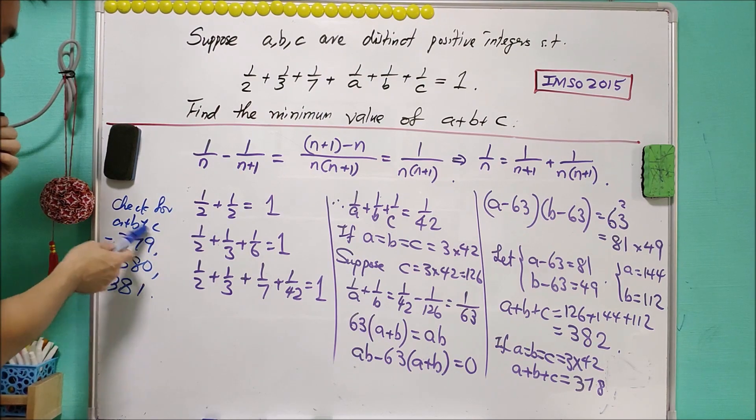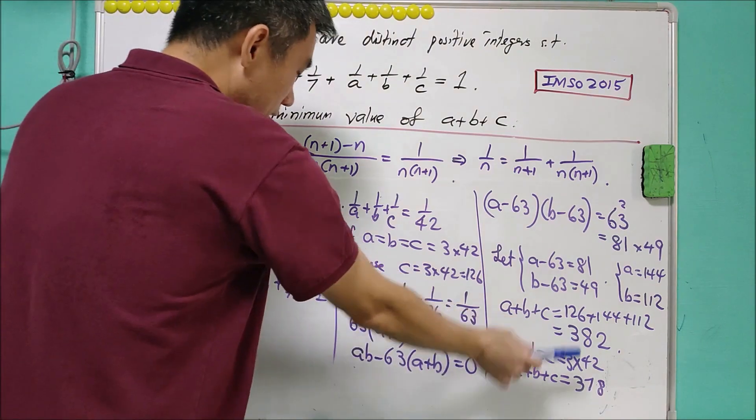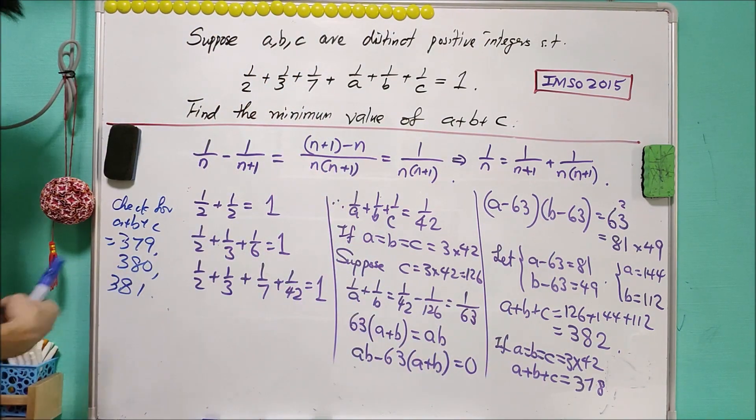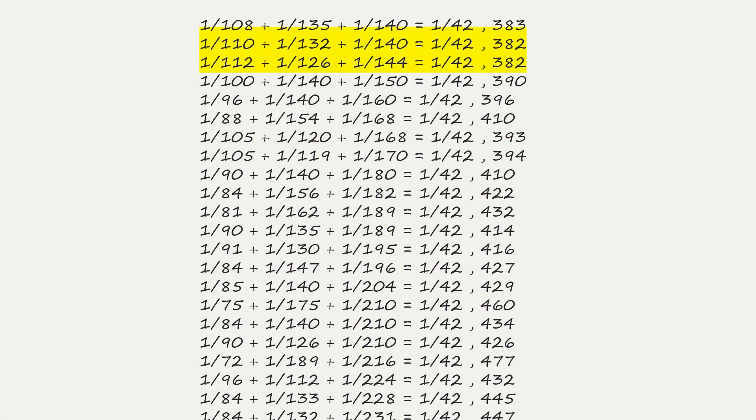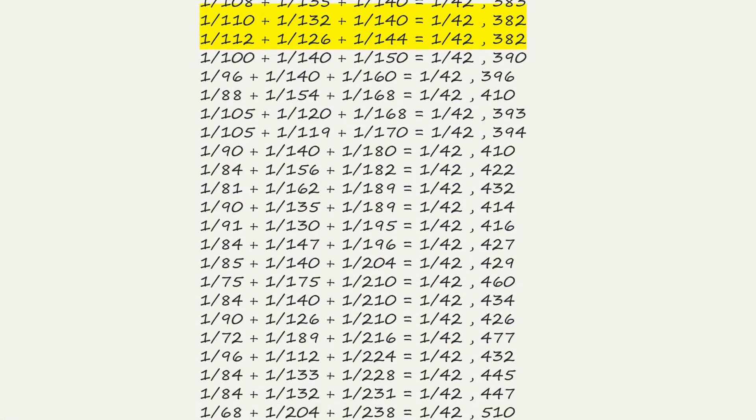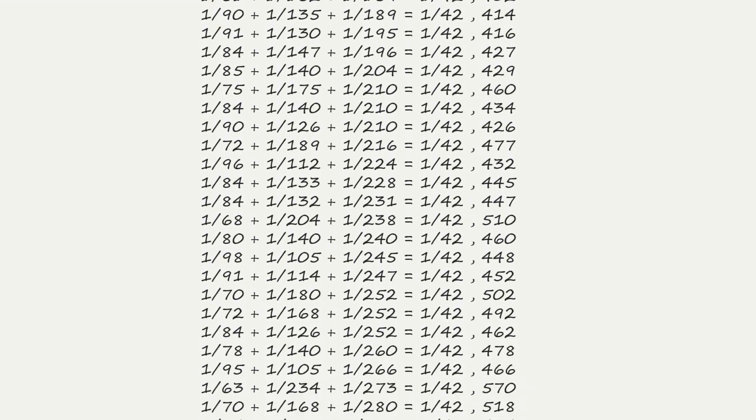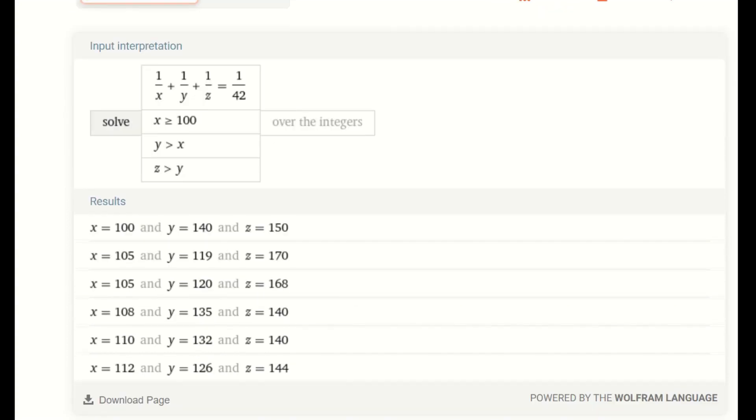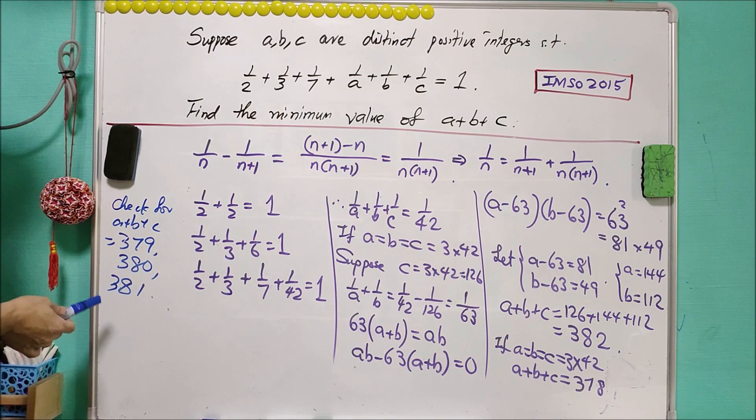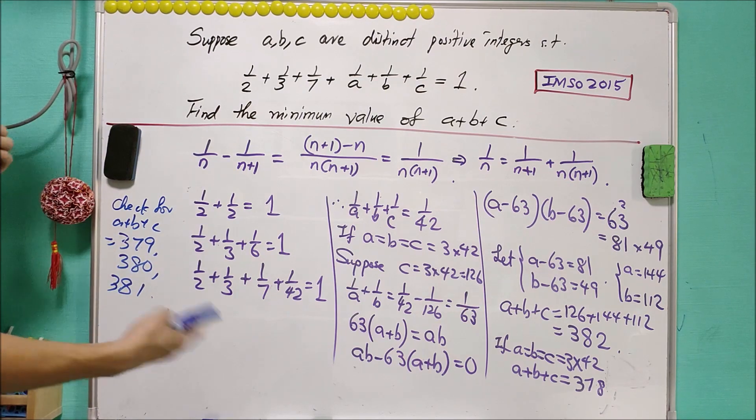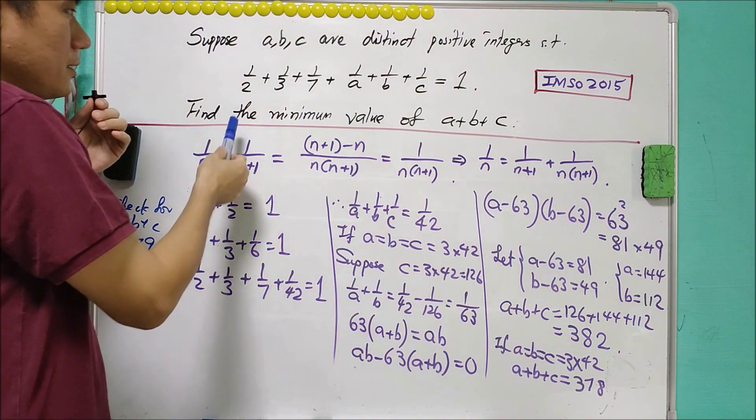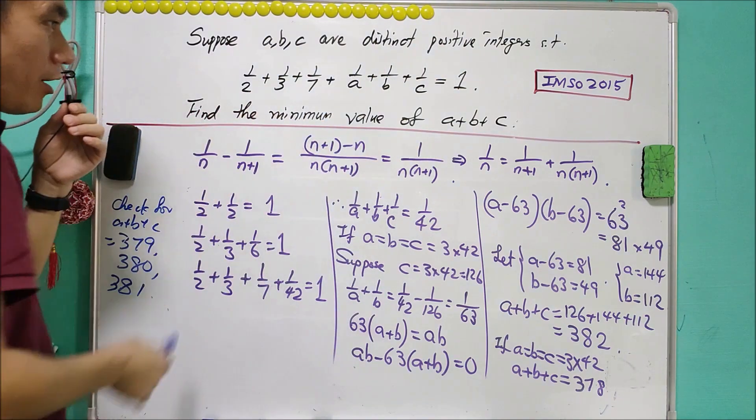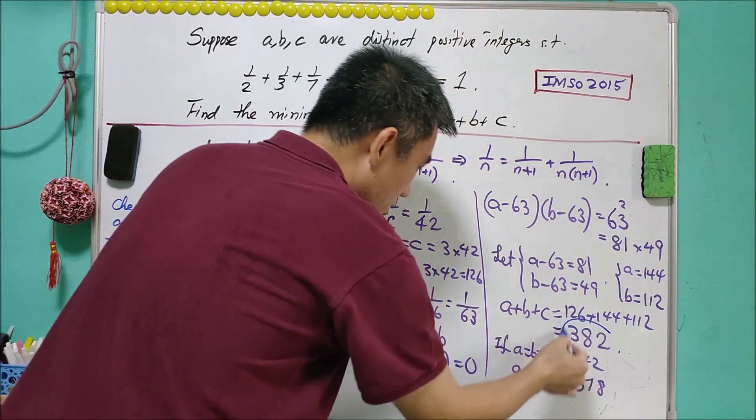I have verified it by hand and by a simple programming. There exists no solution that A plus B plus C equals to this number. Checking by hand is quite messy. In short, with this condition, the minimum of A plus B plus C is equal to 382. And therefore 382 is the answer for this question.